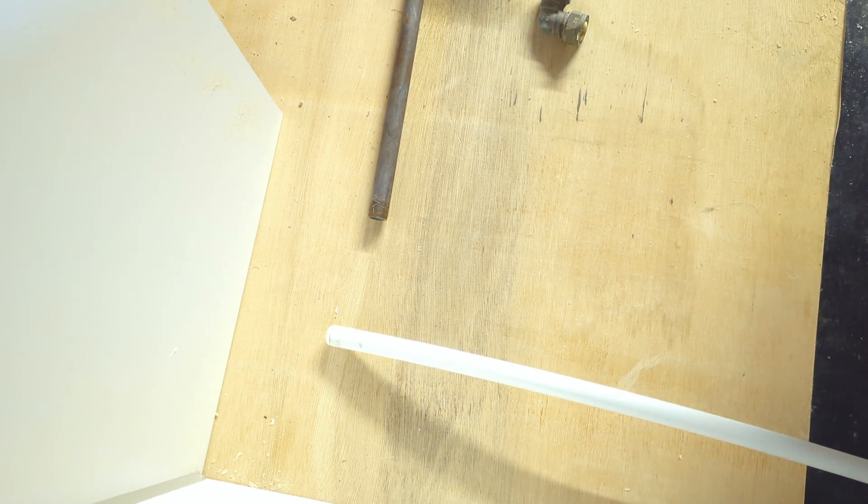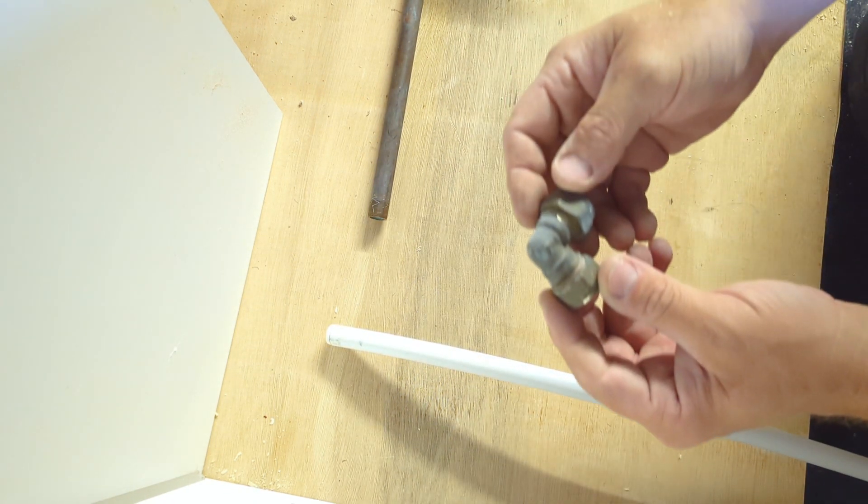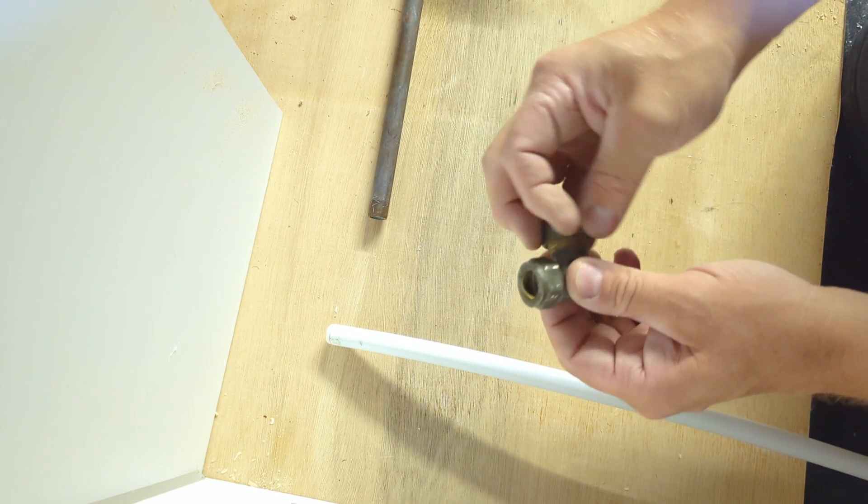Now the second way to join plastic and copper together is with a compression fitting, one like this. We have nuts and olives.